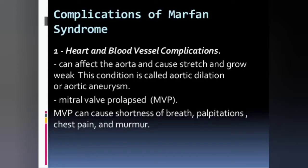Complications of Marfan syndrome include heart and blood vessel complications such as aortic dilation or aortic aneurysm, where the aorta stretches and grows weak. The second complication is MVP — mitral valve prolapse — which can cause shortness of breath (SOB), palpitations, chest pain, and heart murmur.